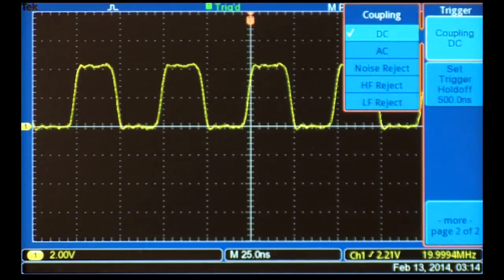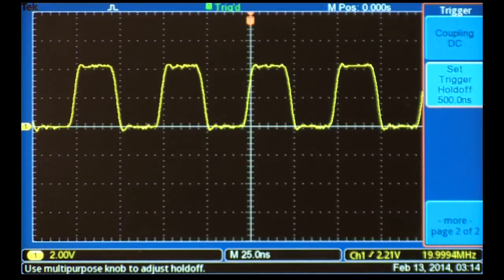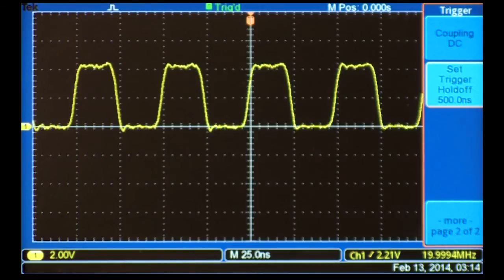Trigger coupling lets you apply filters and hysteresis to the trigger signal. For digital signals with well-defined edges, you probably won't have to worry about this. The trigger holdoff lets you set an amount of time where additional trigger events are ignored after the initial trigger.